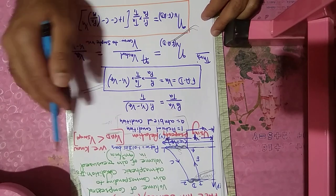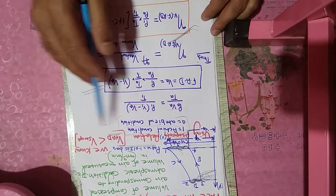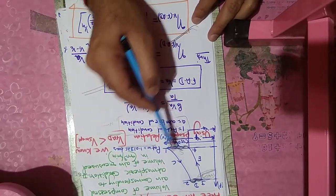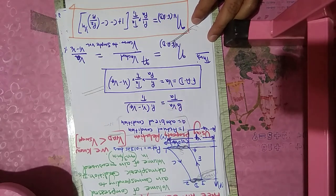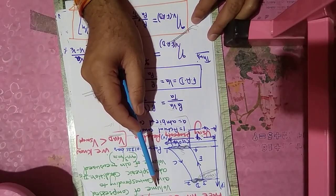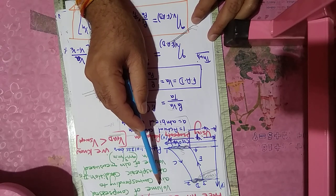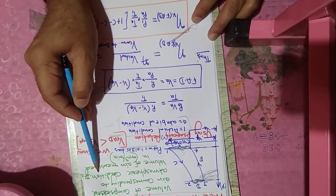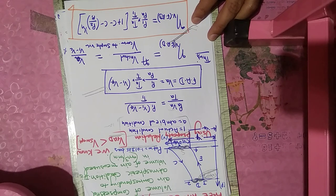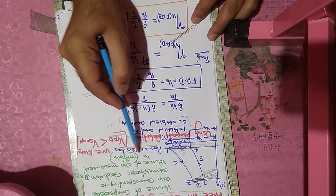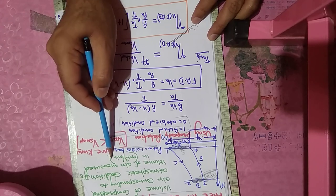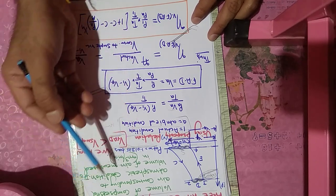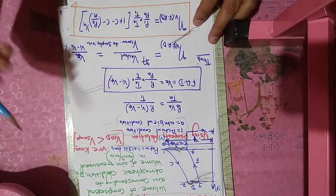Now the new concept comes: free air delivery (FAD). Free air delivery is the capacity of the air compressor — remember, it is the capacity of the air compressor. It is the volume of compressed air corresponding to atmospheric conditions — how much volume of air is compressed — and it is measured in cubic meters per minute. It is basically the rate of volumetric flow at atmospheric conditions.